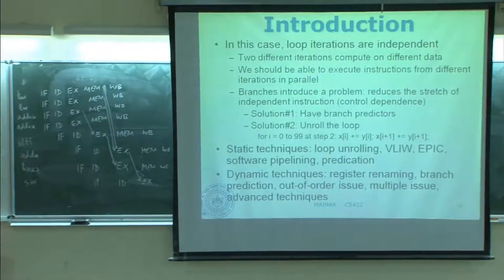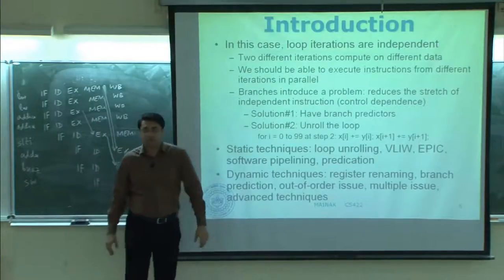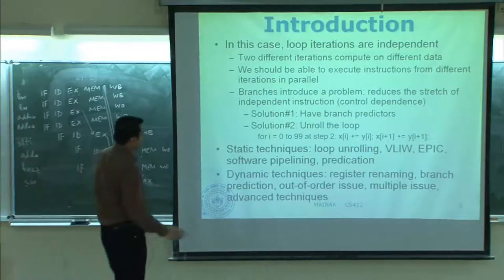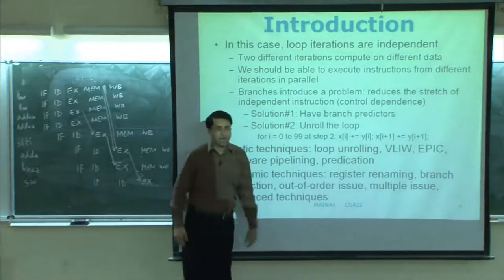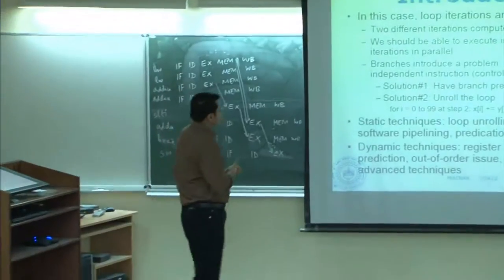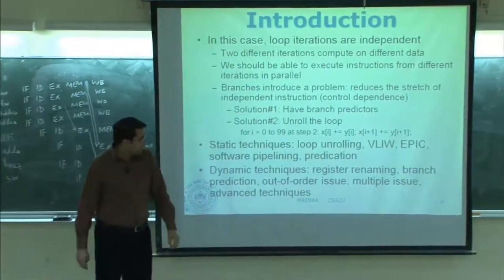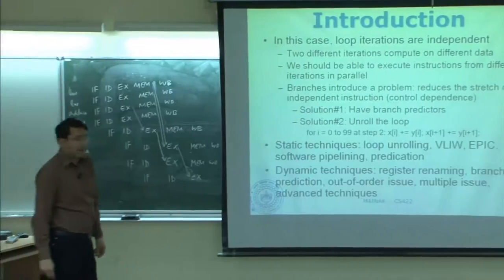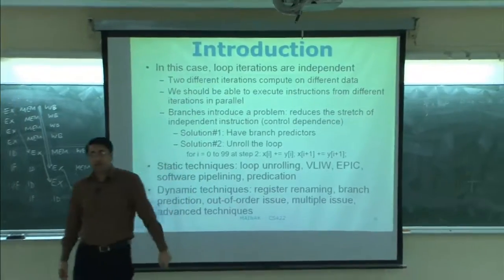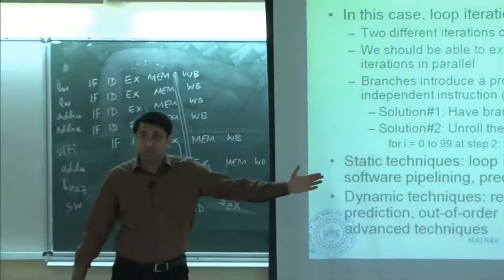There is no data dependence as such, but branches put a bunch of instructions that become dependent on a certain branch. One solution is branch predictors, but once in a while they will make mistakes, so you have to do corrective measures. The second solution is to unroll the loop. If you change the loop to go from 0 to 99 in a step of 2 and within each iteration do two things, instead of having 100 branch instructions you now have 50 branch instructions.